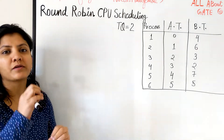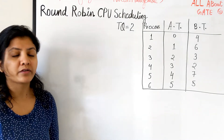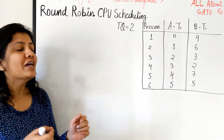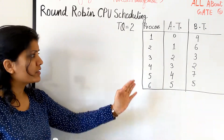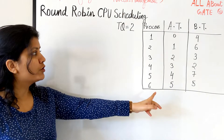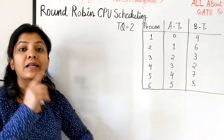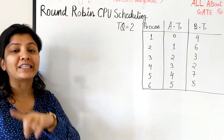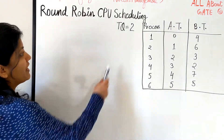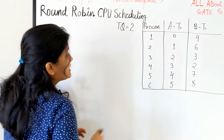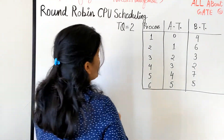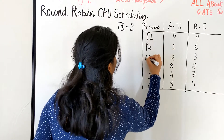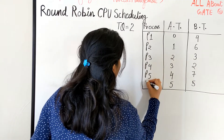We've understood the simplest form of Round Robin. Now let's understand a slightly more complicated question. Although it's not a great question in itself, it's very good because each and every process is arriving at a different time. This will give you a good idea of how to actually create a schedule. We have a time quantum and six processes: P1, P2, P3, P4, P5, and P6.